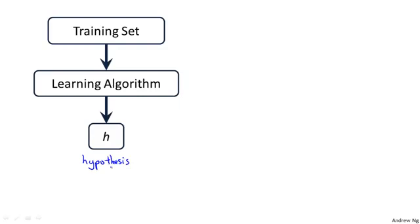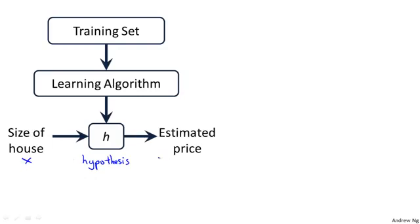And what the job of the hypothesis is, is a function that takes as input the size of a house, like maybe the size of a new house that your friend is trying to sell. So it takes in a new value of x, and it tries to output the estimated value of y for the corresponding house. So h is a function that maps from x's to y's.